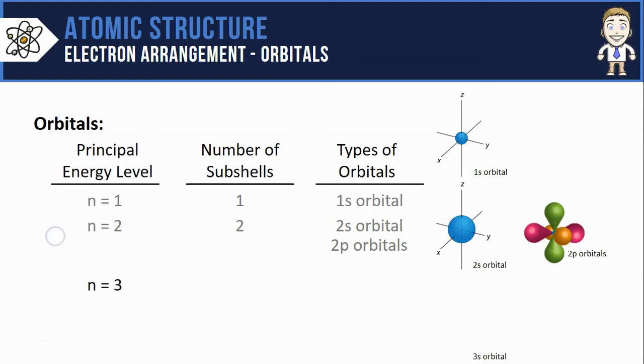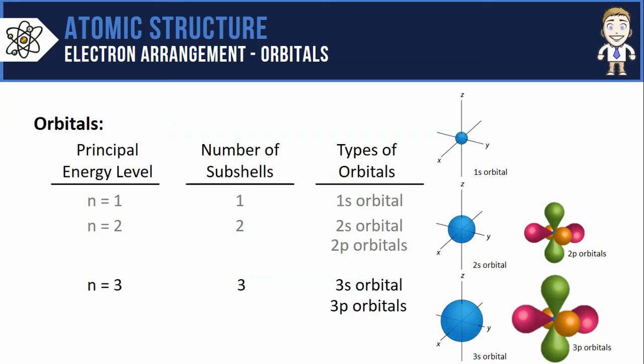Let's scale up now to the third energy level, the n equals 3. This of course has three different subshells and you might be picking up on some patterns here. Those three subshells are the 3s, which is just like the 1s and the 2s, just bigger. The 3p orbitals, which are the same as the 2p orbitals, just bigger. The third type is our new one in the third energy level called the 3d orbitals.